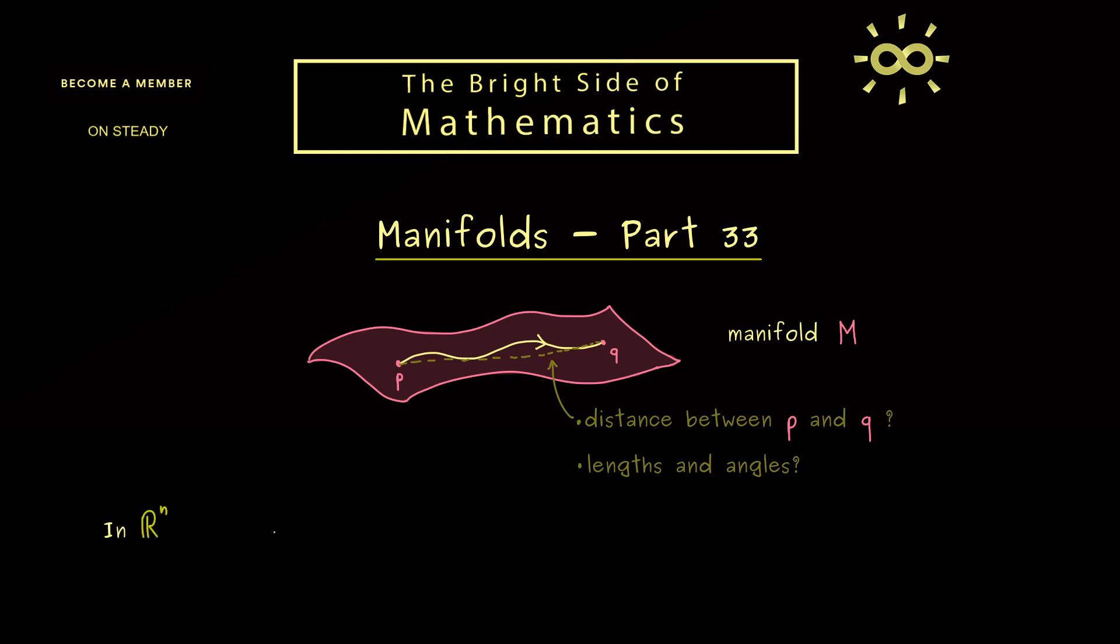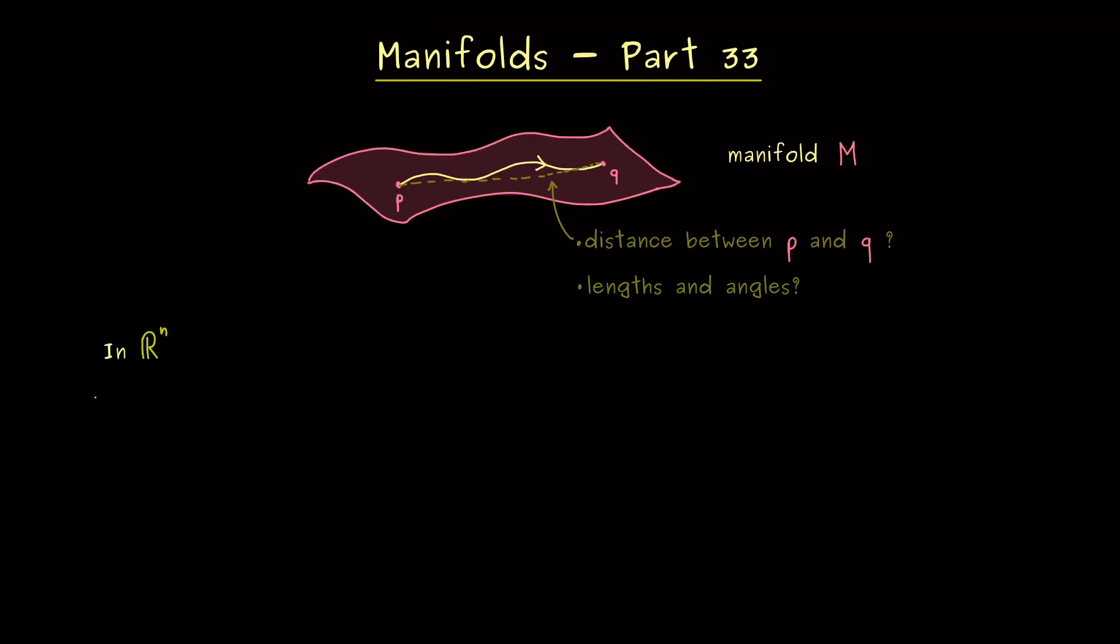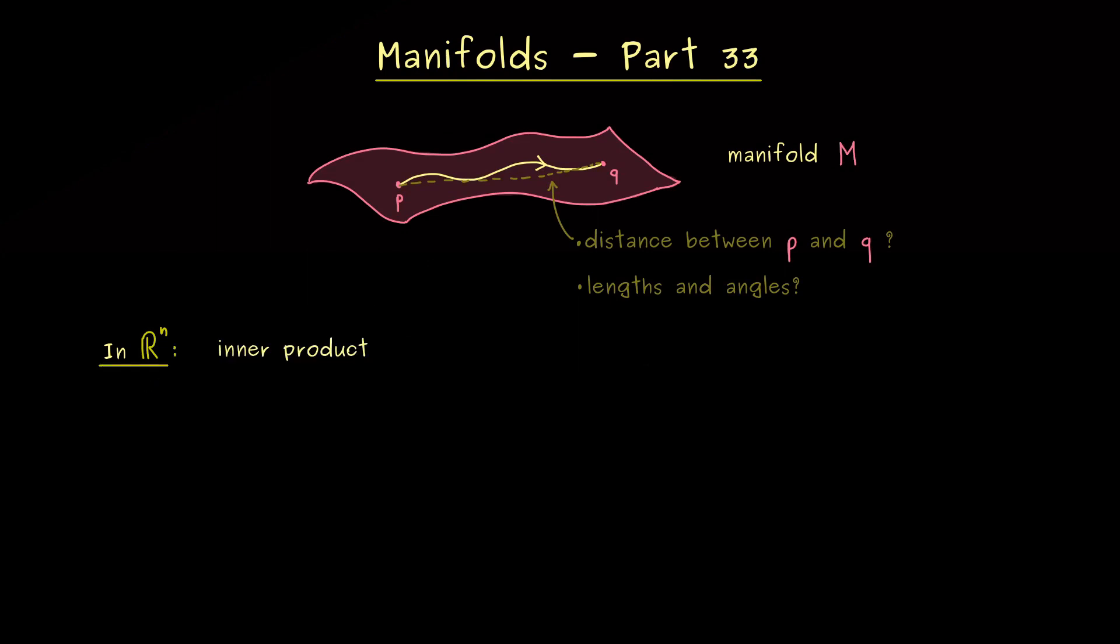In general we can do that by fixing an inner product in the vector space. And usually it's denoted with pointed brackets and they give the geometry to R^n. And please don't forget you always need two vectors as an input for the inner product. And what comes out is just a real number.